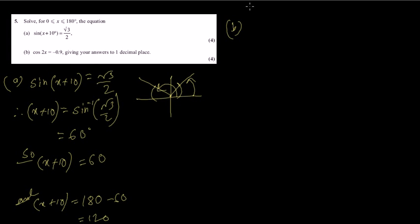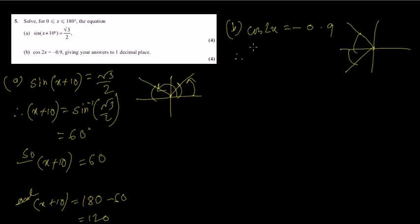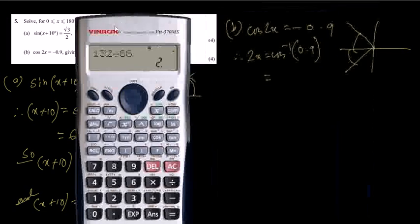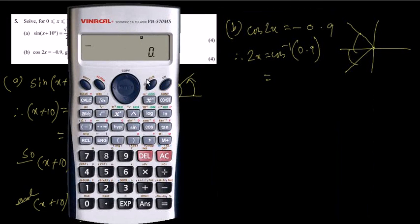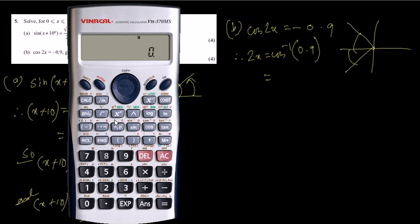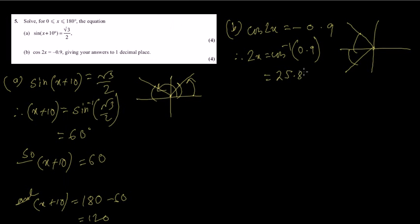Question 5b: cos(2x) equals minus 0.9. The answer has to be in one decimal place. Cosine is negative in the second and third quadrants. The angle this time is 2x. For the basic angle, we only take the positive value: cos inverse of 0.9. The calculator must be in degrees mode. Cos inverse of 0.9 is 25.842 degrees — that's the basic angle.